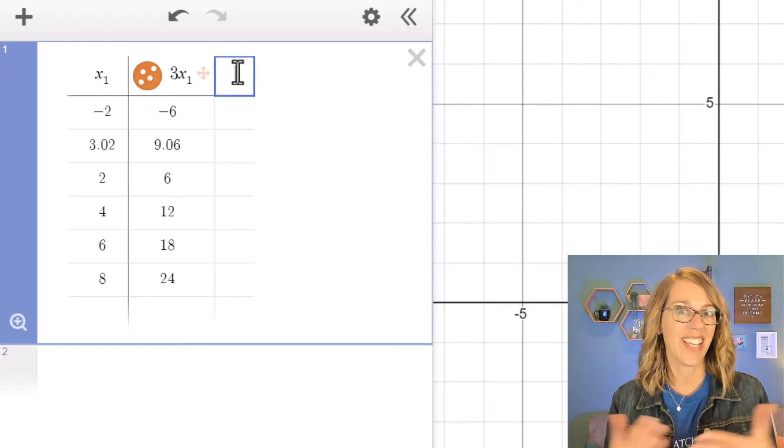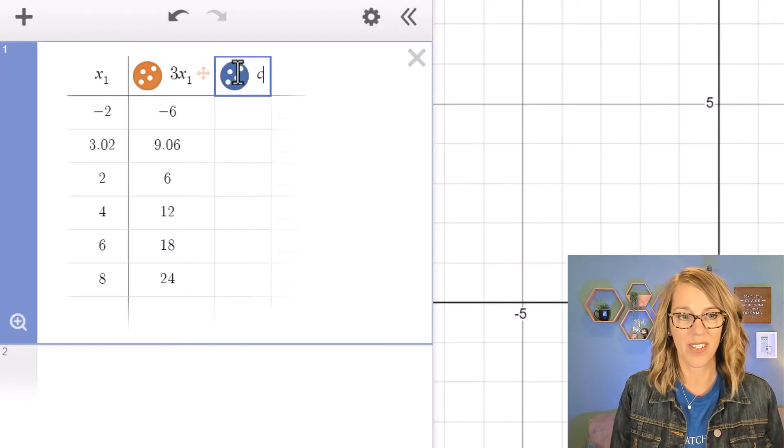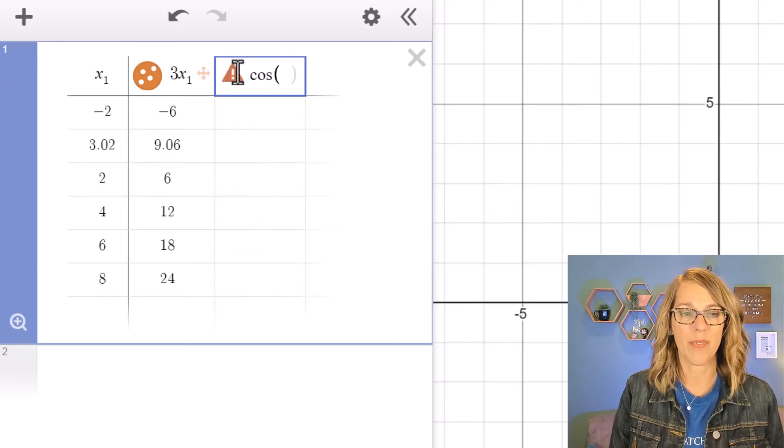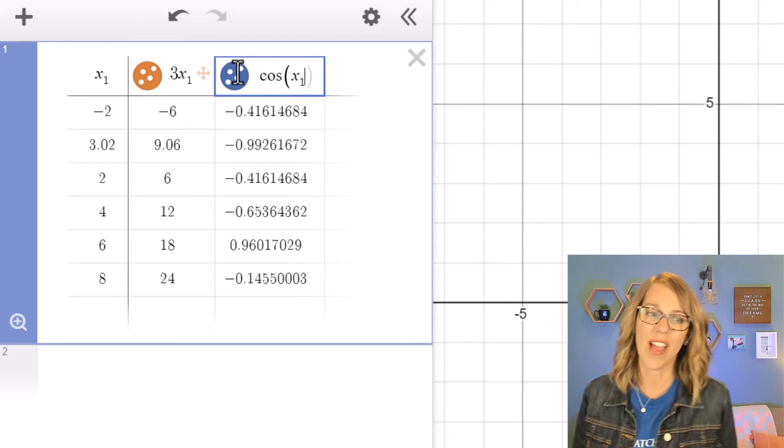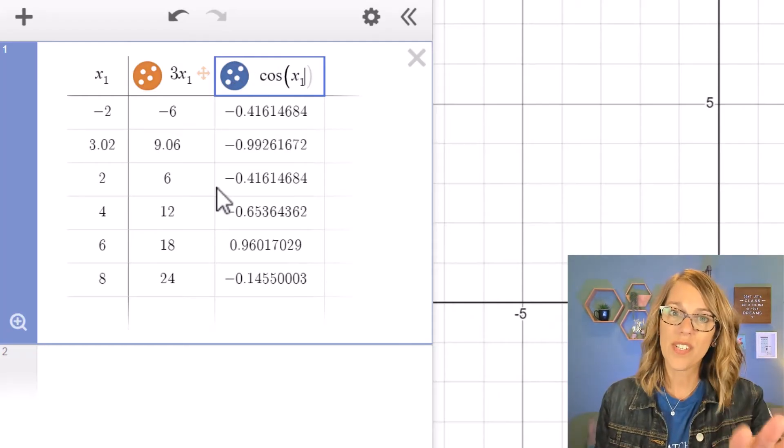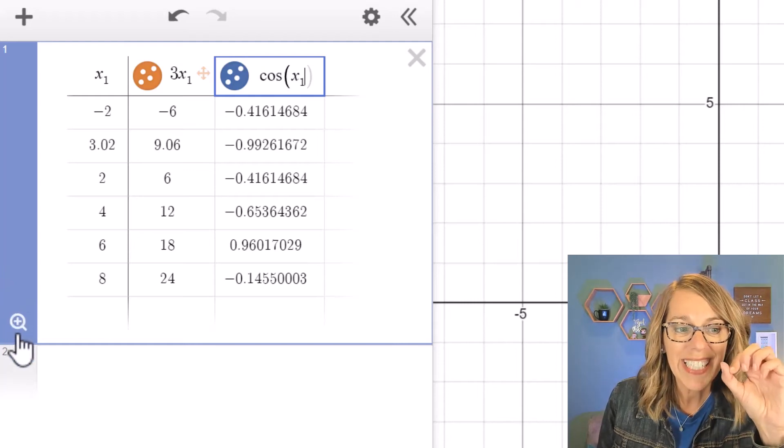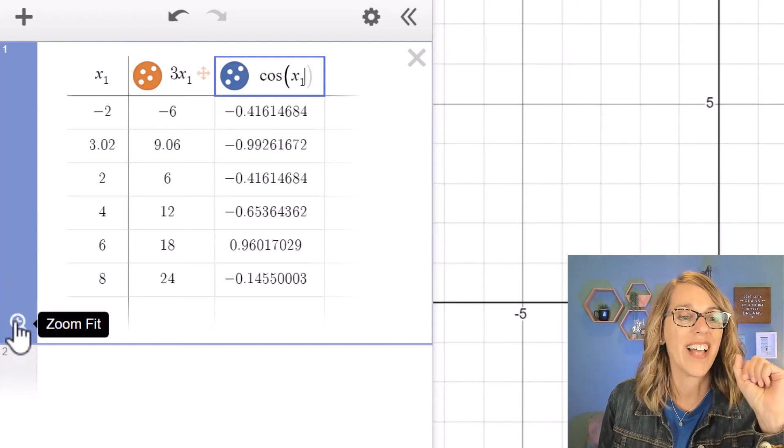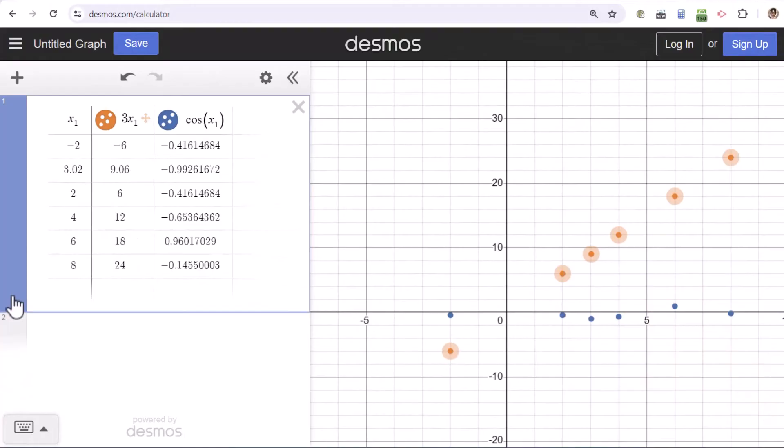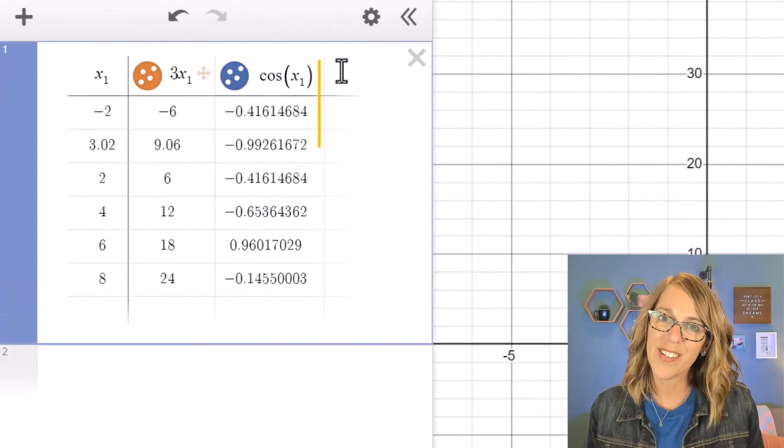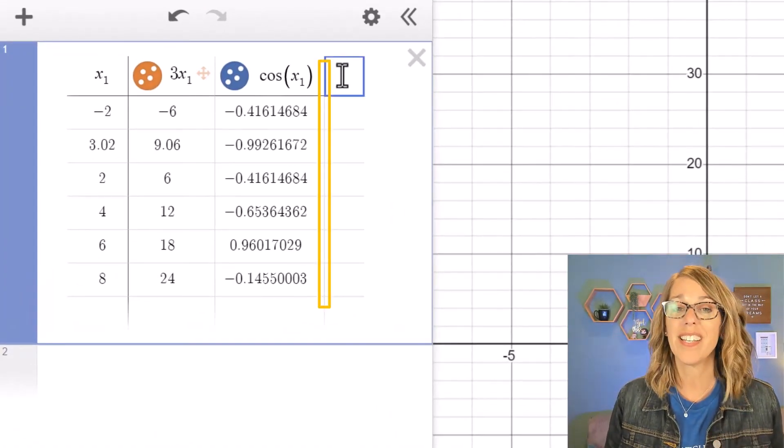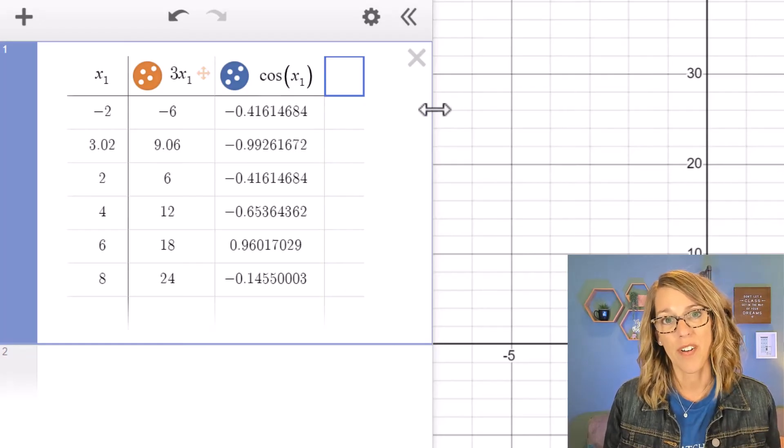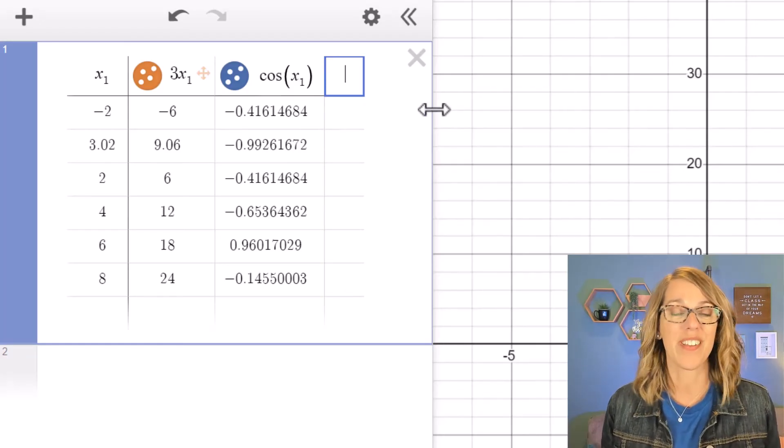I can do this again. Say that I want to take the cosine of these values and I can do cosine parentheses x. I want x sub one, so I'm going to type in one to get those values as well. Now notice because it's also graphing these I've got that little zoom fit magnifying glass. If I click on this it's going to do its best job to show me all of my points. Now the line continues to show up at the edge of my table which means I can continue typing in more and more functions as I'm working with these values.